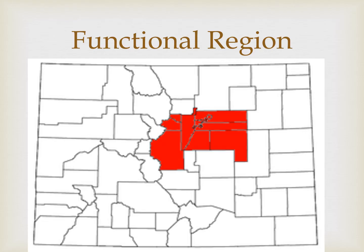That is especially prevalent with functional regions. An example of a node — a center point around which activity operates — is a city. A city has a surrounding region within which workers commute to the downtown area or to office parks in the suburbs. That entire urban area defined by people moving toward and within it can be a functional region. What we see here is called the Denver Metropolitan Statistical Area, or MSA — the city of Denver and the surrounding counties that are functionally tied to it, where people may live in the suburbs but work in downtown Denver.